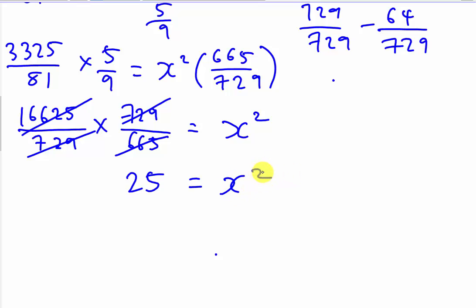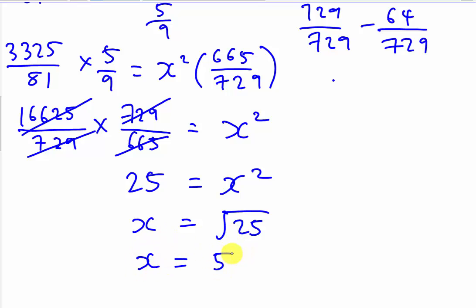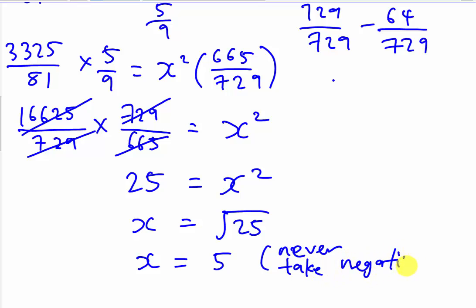I'm going to move my square to the other side — it will become square root. So x equals the square root of 25. Normally we get positive and negative for square root, but in this case we only take positive 5. Why? Because x is a length — the length of the square. It's impossible to get a negative length. So never take the negative value when they are length, volume, or area. We take positive 5. I think this is the answer for x.